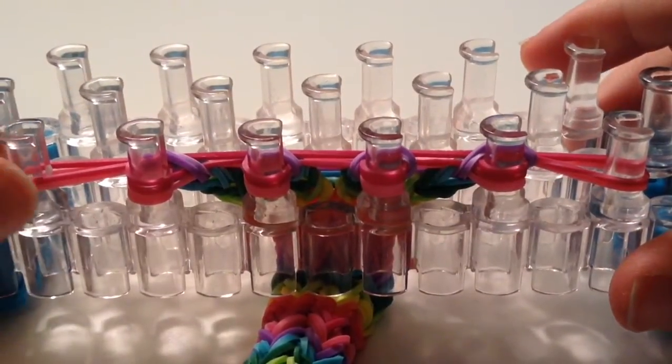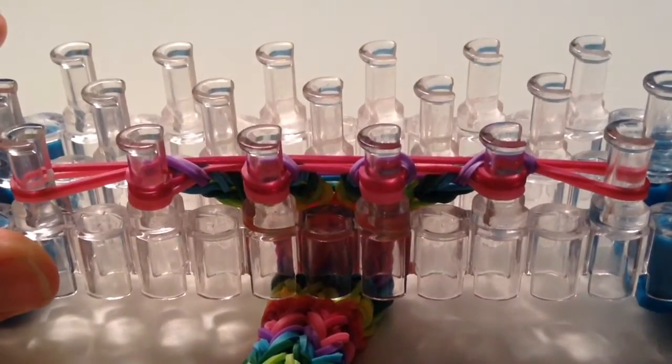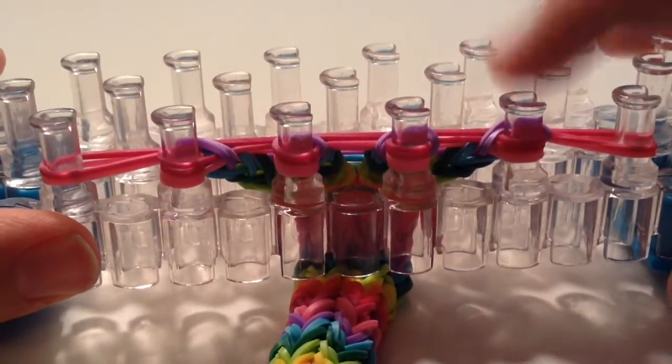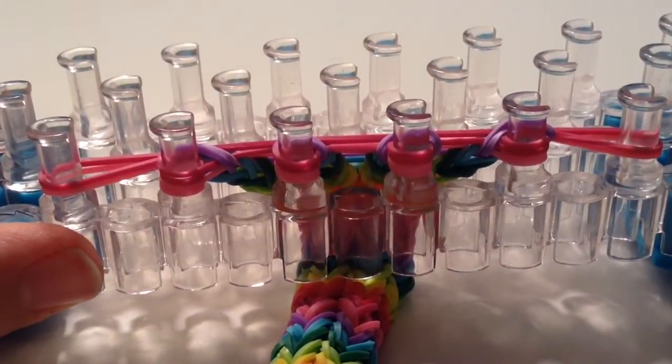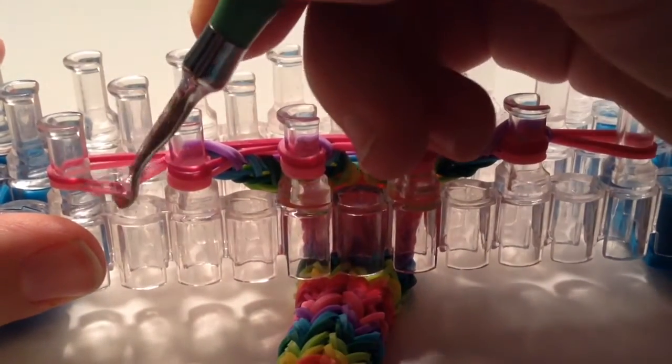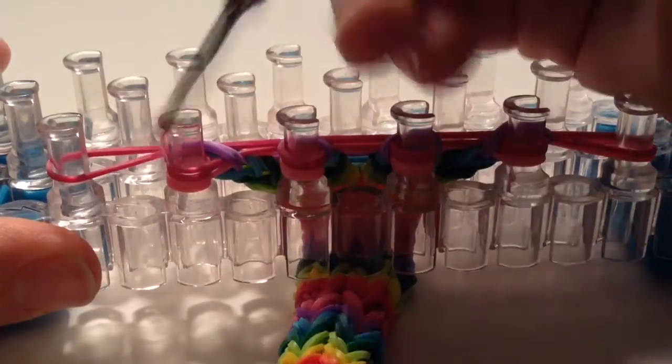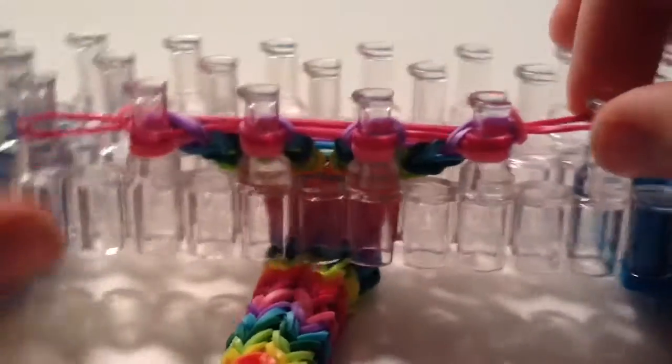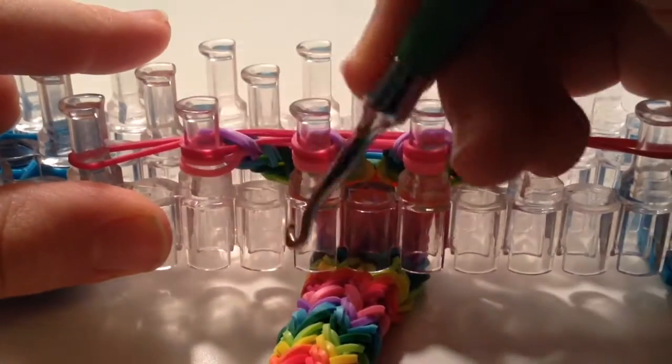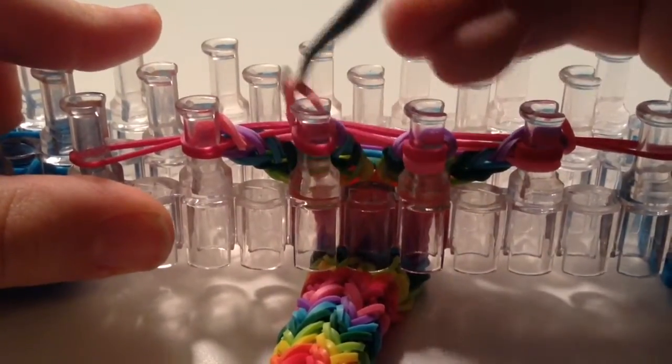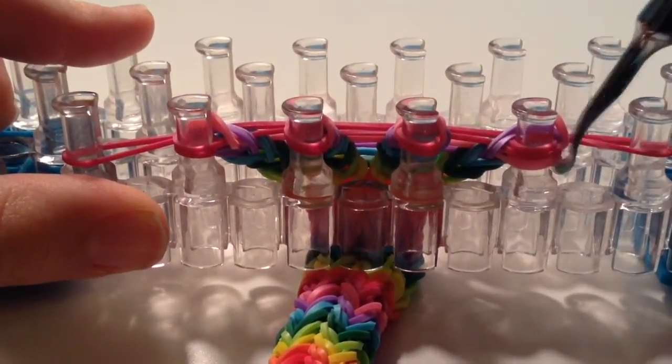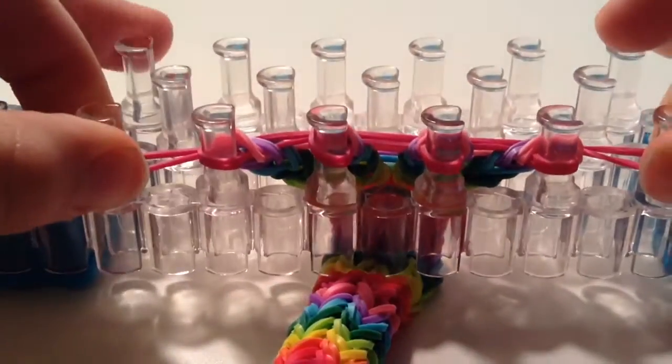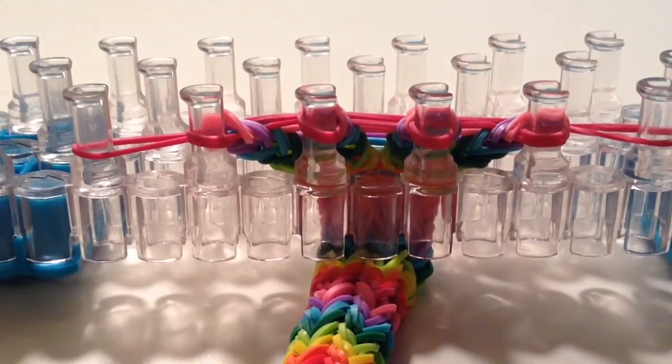Once you're done with your bracelet and you have hooked over the last layer of bands, there should be only two layers of bands on the two outer pins and four on the four or however many middle pins you have. Take your hook, grab the bottom bands, bring it up and over on the outer two pins. And then on the middle pins, you're going to hook the bottom two bands up and over just like you would normally, except now you should only have one color of bands on all of the pins. So one band on the two outer pins and two bands on all of the middle pins.